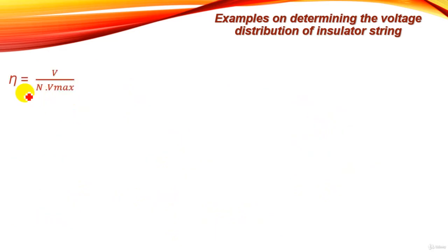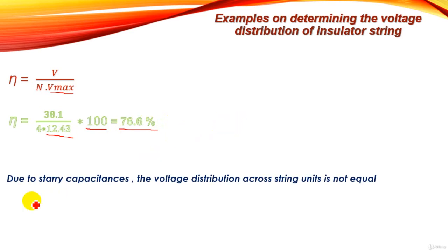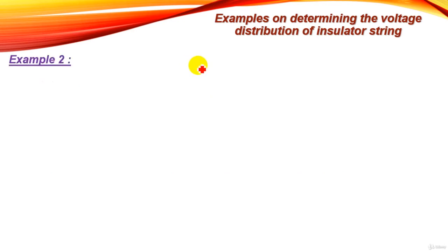Now we find the string efficiency. Eta equals V divided by (N × V_maximum). V equals 38.1 kV, N equals 4 units, and V_maximum equals 12.43 kV. So eta equals 76.6%. Due to the unequal voltage distribution across the units, the efficiency decreases. The maximum voltage is always across the unit nearest to the conductor.